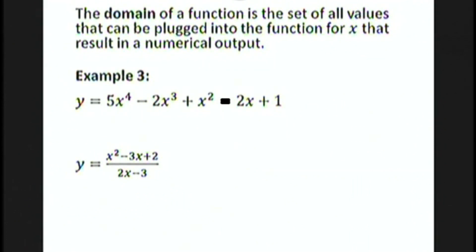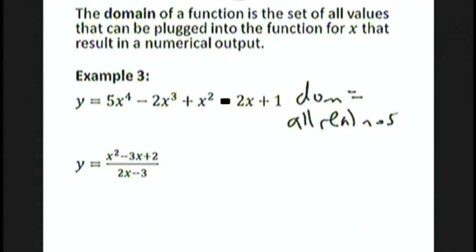The domain of a function is the set of all values that can be plugged into the function for x that result in a numerical output. For a polynomial example: y equals 5x to the fourth minus 2x cubed plus x squared minus 2x plus 1. The domain of this function is all real numbers, because you could plug in any real value for x and get a real output. In fact, every polynomial function has domain all real numbers.